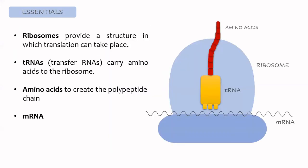The essential elements needed in translation are: first, the messenger RNA, because without it we don't have the information to create the protein. Second, the ribosomes, which provide the structure in which translation can take place and catalyze the reaction that links amino acids to make the new polypeptide chain. As we can see in this picture, the ribosome has two subunits that come together around the RNA messenger, each with a different function. Third, the transfer RNAs, which carry the amino acids to the ribosome and are responsible for reading the RNA sequence. And finally, the amino acids themselves.